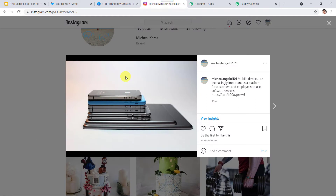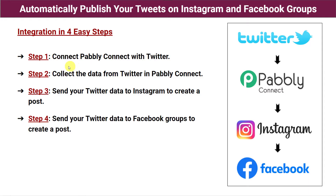I have done this in just four simple steps, and anyone can do this very easily. Step one: connect Pabbly Connect with Twitter. Step two: collect the data from Twitter in Pabbly Connect. Step three: send your Twitter data to Instagram to create a post — whatever data Pabbly Connect captured from Twitter will be sent to Instagram. Step four: send your Twitter data to Facebook groups to create a post. In this way we will create an integration between Twitter, Instagram, and Facebook using Pabbly Connect. Let us learn the integration process now.